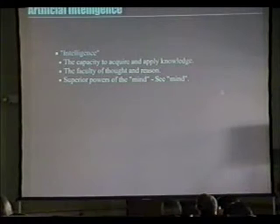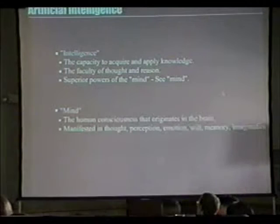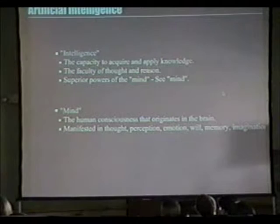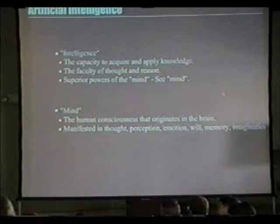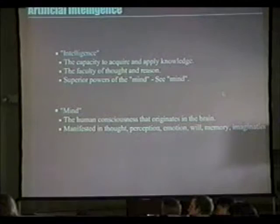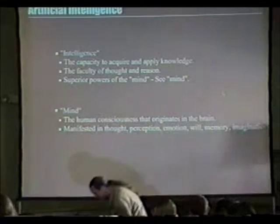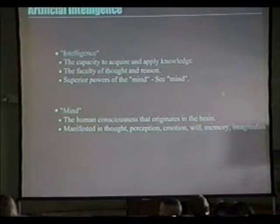The third definition of intelligence is where human bias becomes a factor — superior powers of the mind. Mind is defined as the human consciousness that originates in the brain, manifested in thought, perception, emotion, will, memory, and imagination. This is where the definition skews. Artificial intelligence is not taking things to a different level — it's really just automating human interaction in an automated fashion.